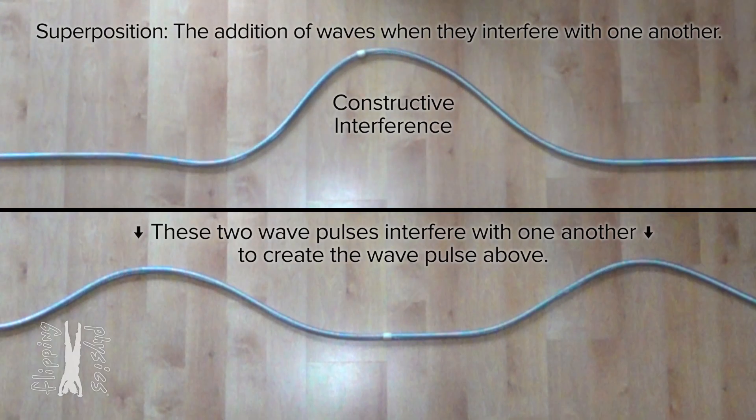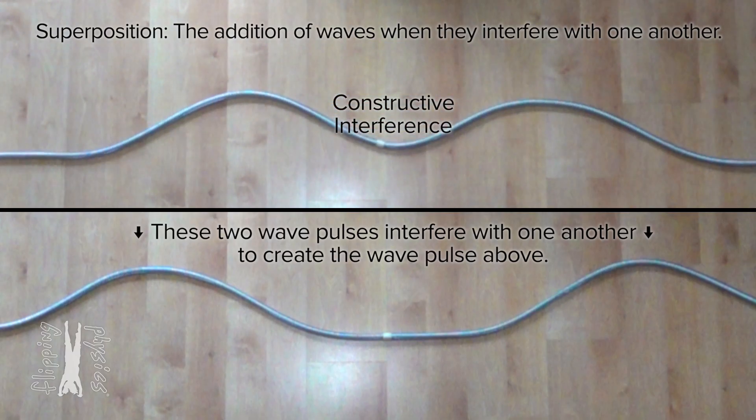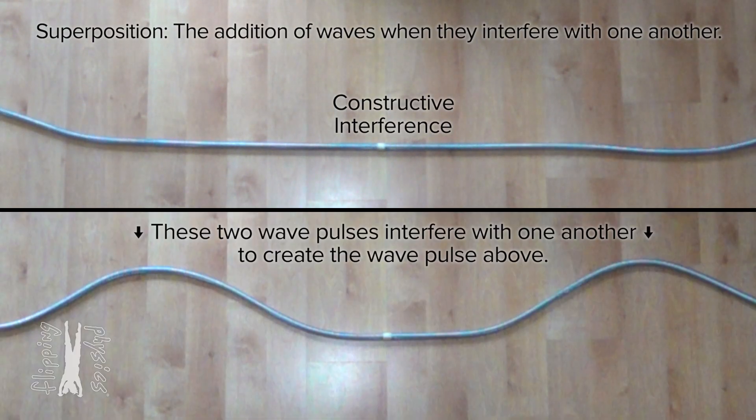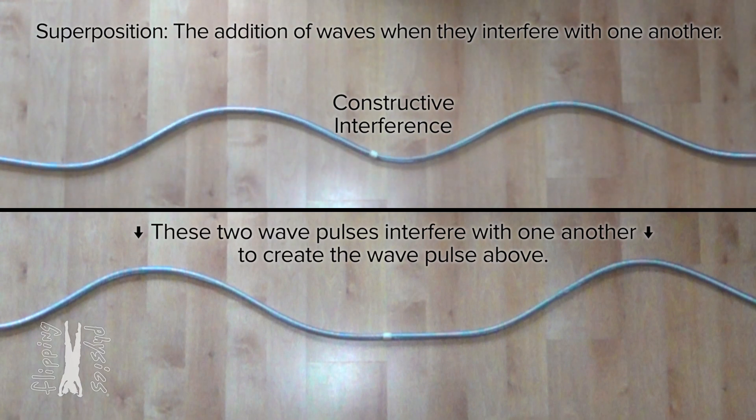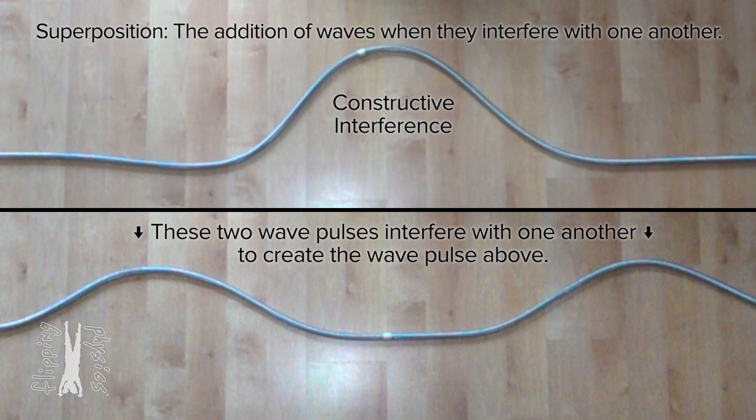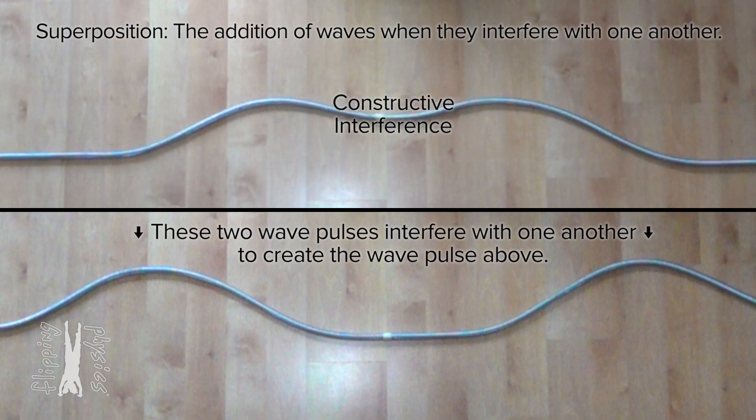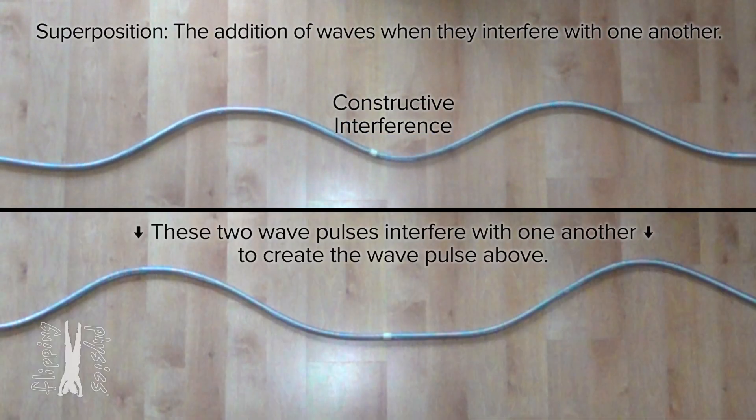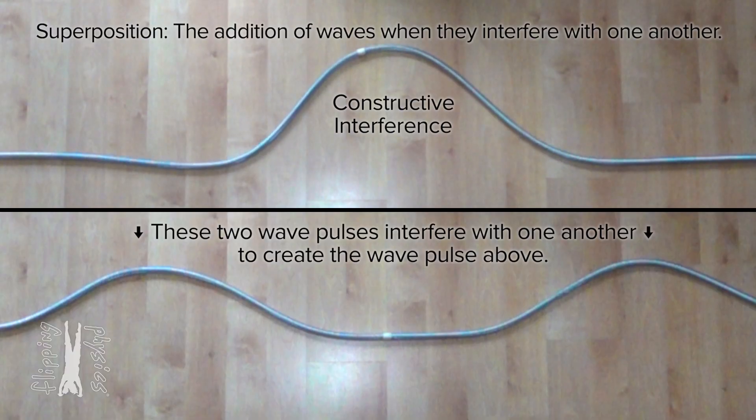And after the two wave pulses interfere with one another, the two waves continue on the spring with the same shape they had before. They continue on as if they had never occupied the same space and had never interfered with one another. That makes sense because the wave pulse, which is stored energy in the medium, just continues on moving.